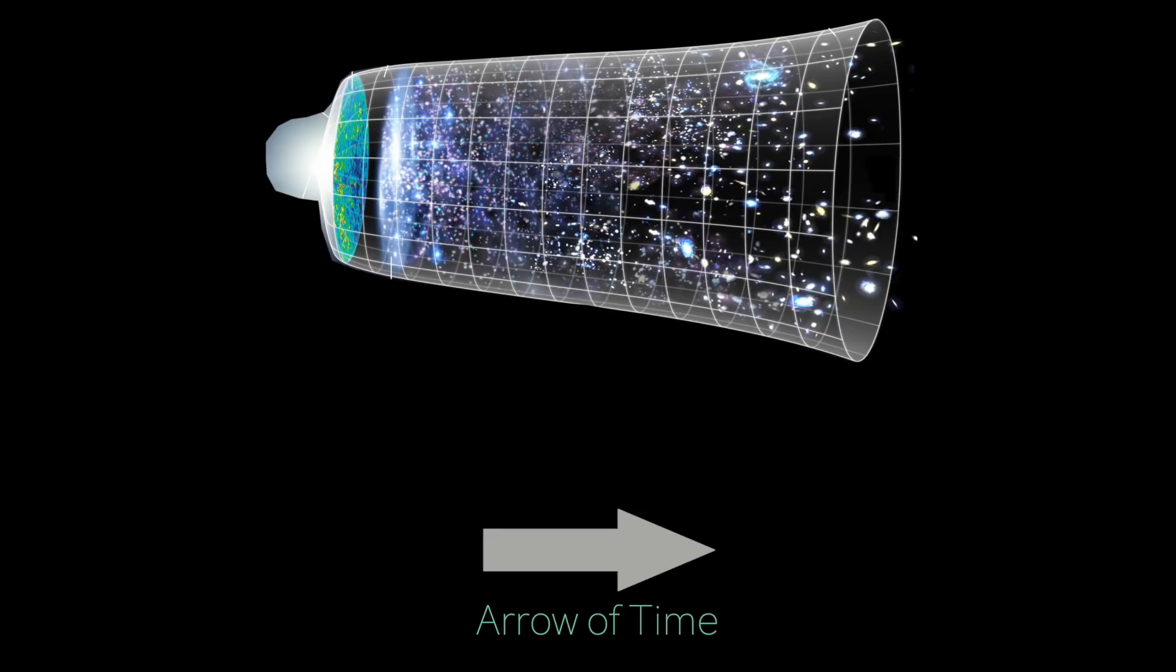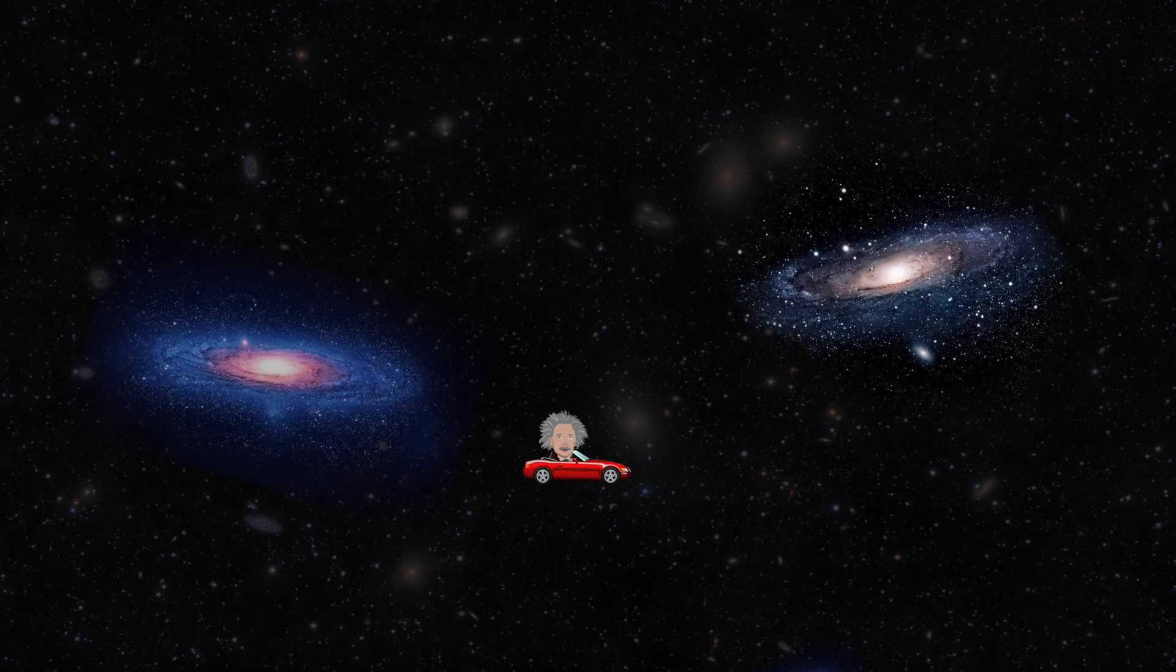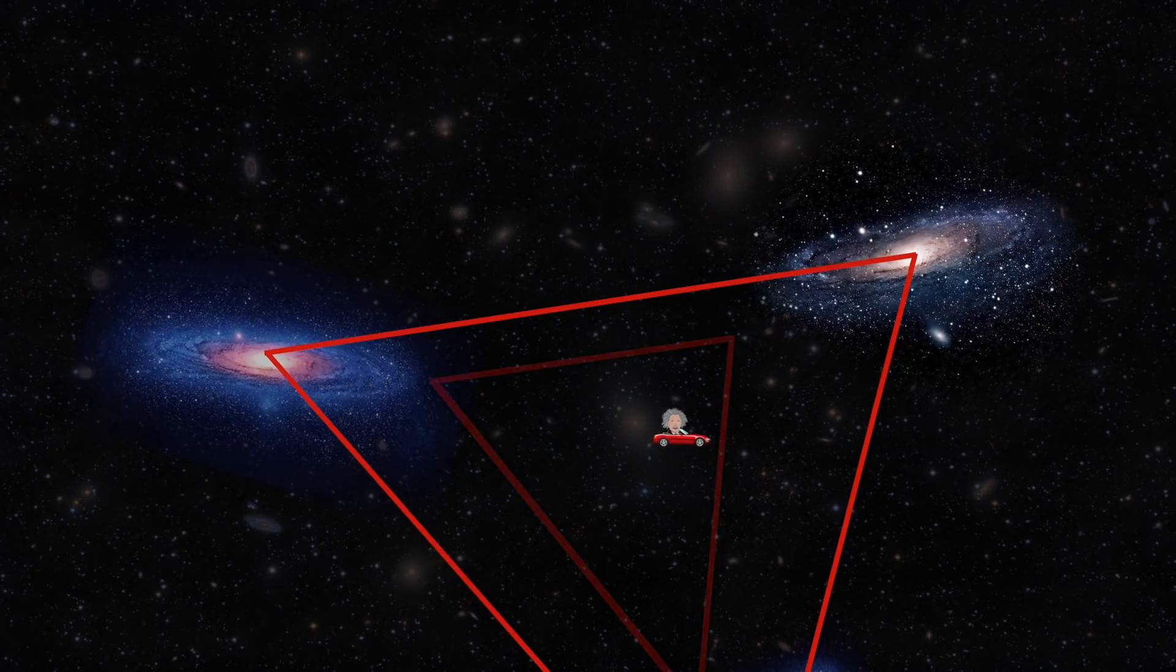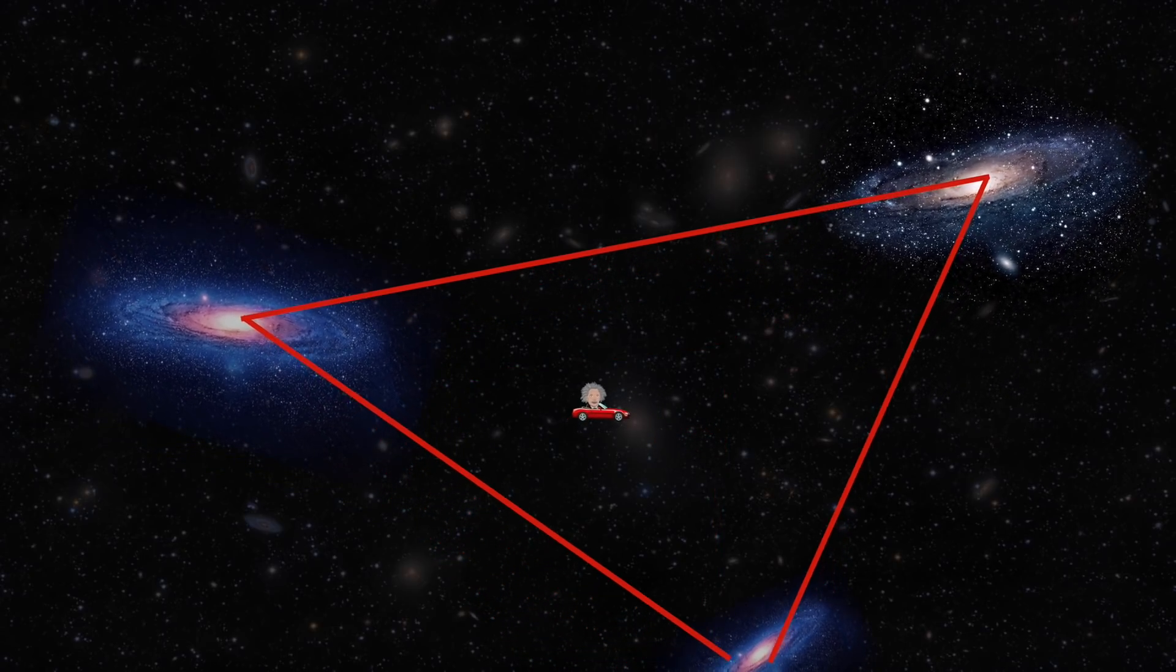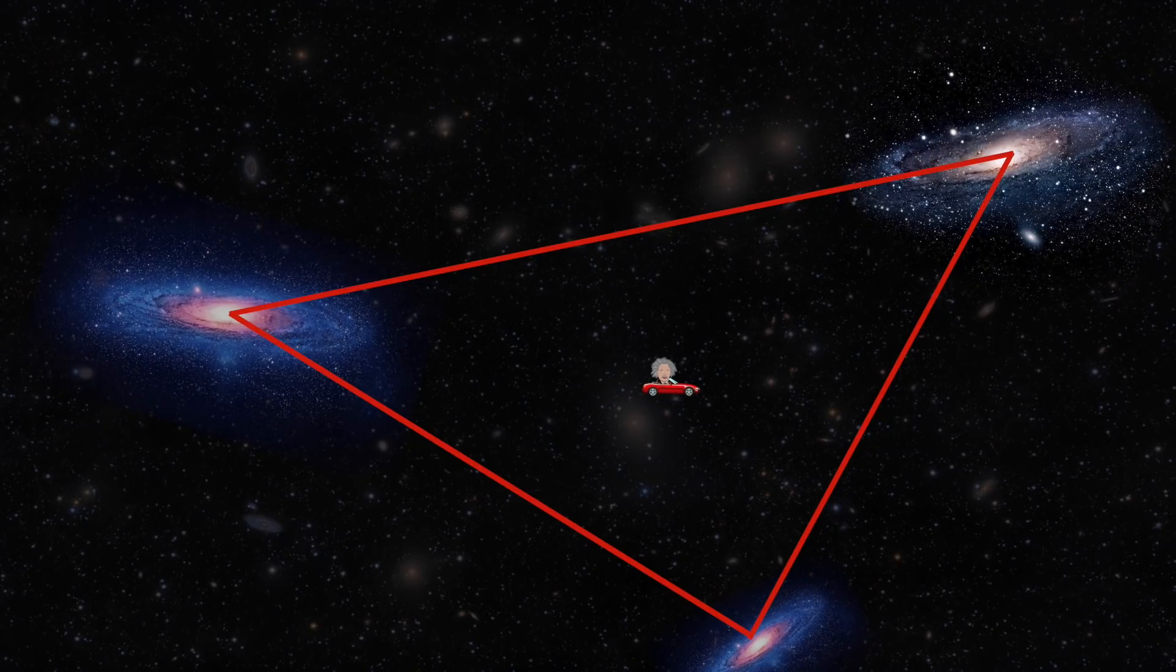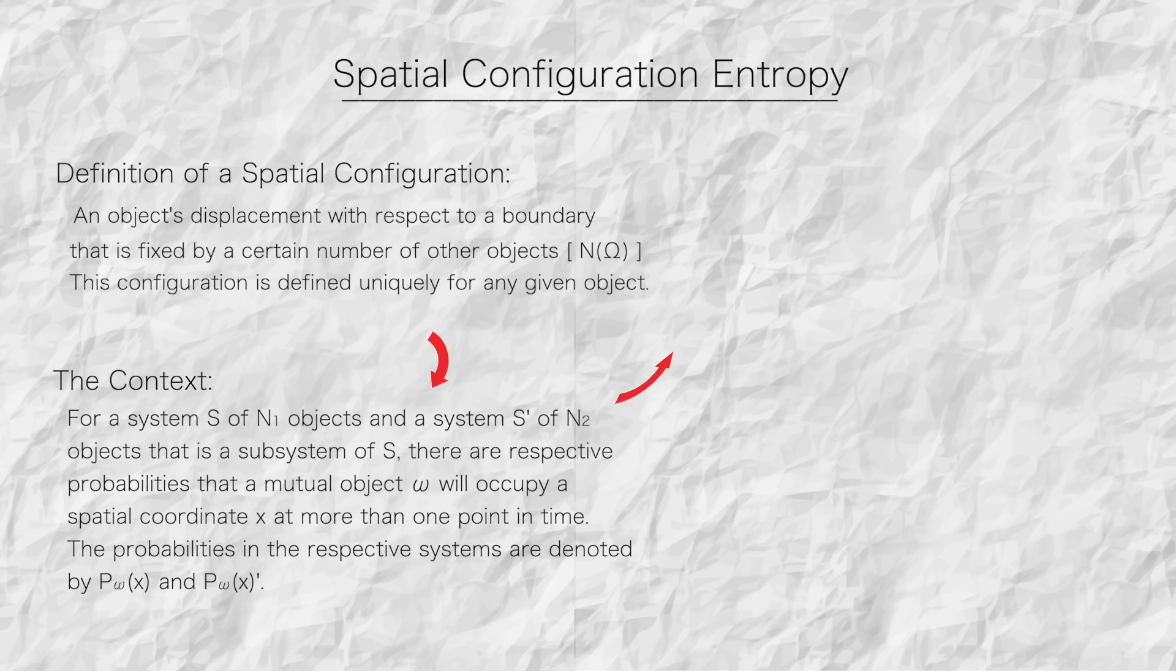Well, there is a sort of entropy that governs spatial systems too. Consider an object enclosed in a fixed boundary. As that boundary grows larger and larger, it becomes less and less likely that the object will ever be able to traverse a location where it was at earlier. Thus, the chance of seeing a prior spatial configuration repeat itself decreases with increasing system size.